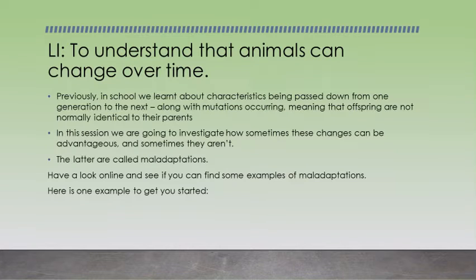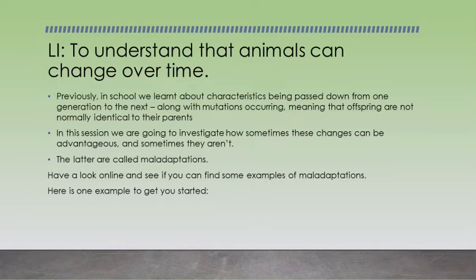In previous learning in school, we learnt about the characteristics of a person being passed down from one generation to the next. Those things could be eye colour, hair colour, or body shape. We also discussed mutations occurring, which means that offspring are not normally identical to parents — so although you do inherit some traits from your parents, you're not exactly the same.